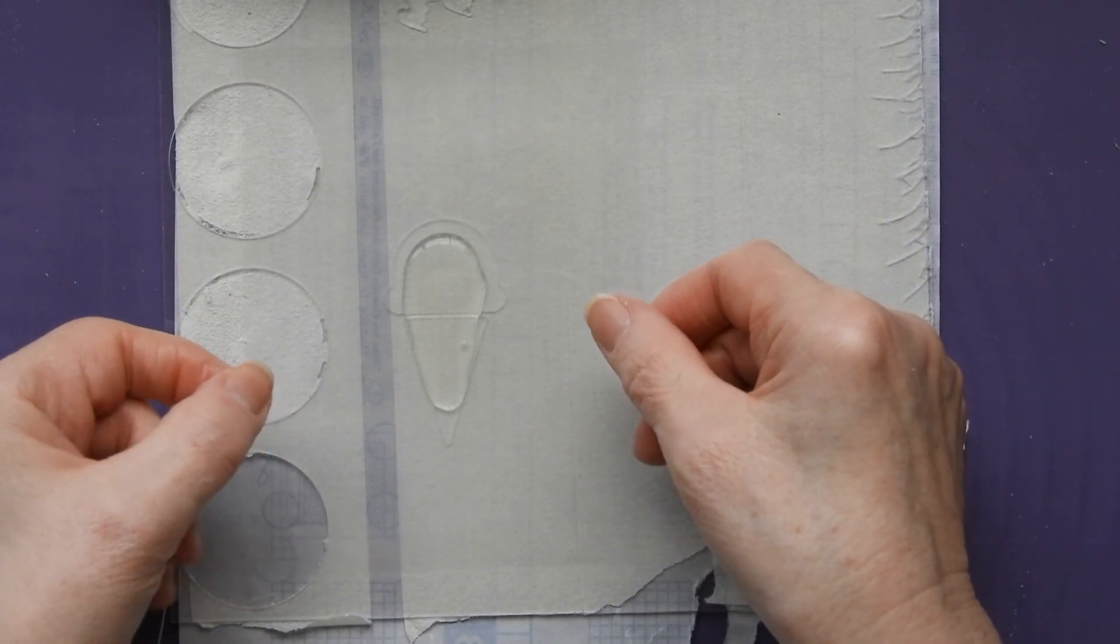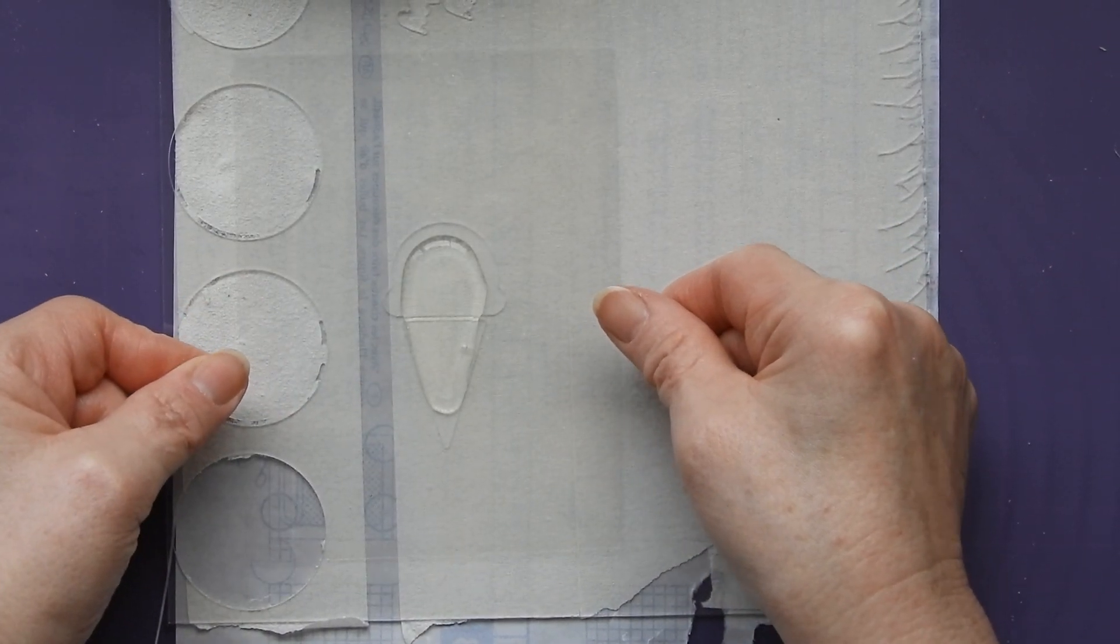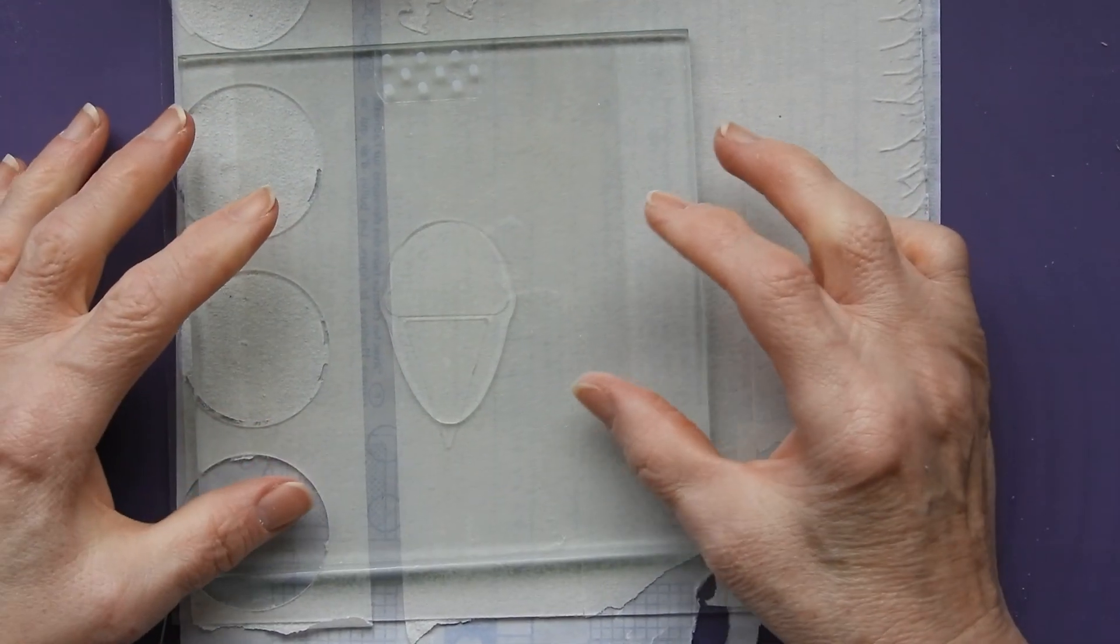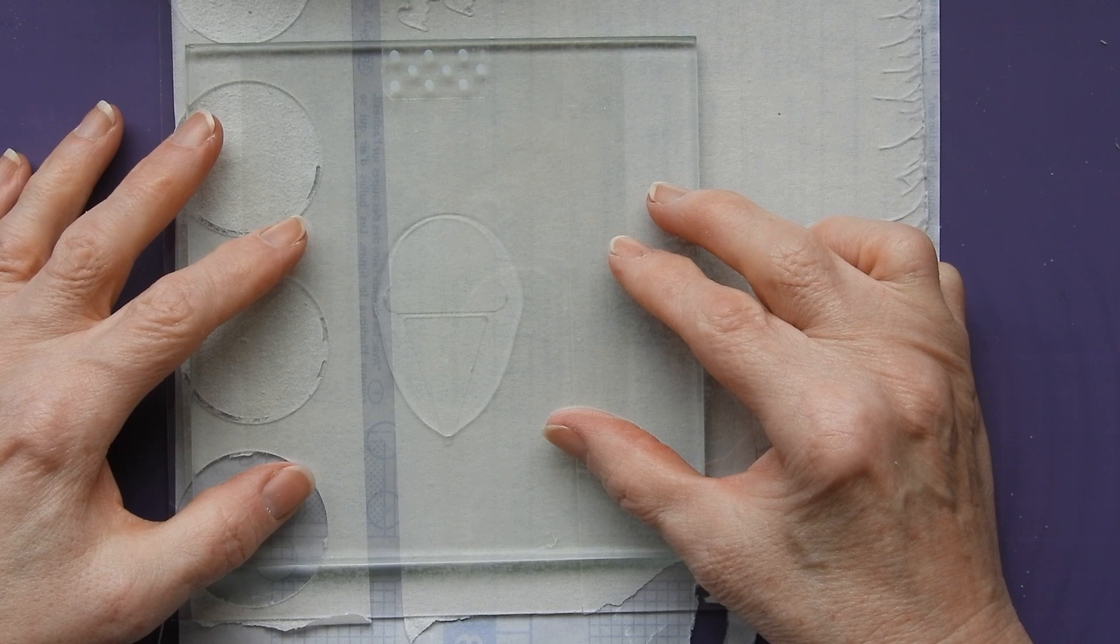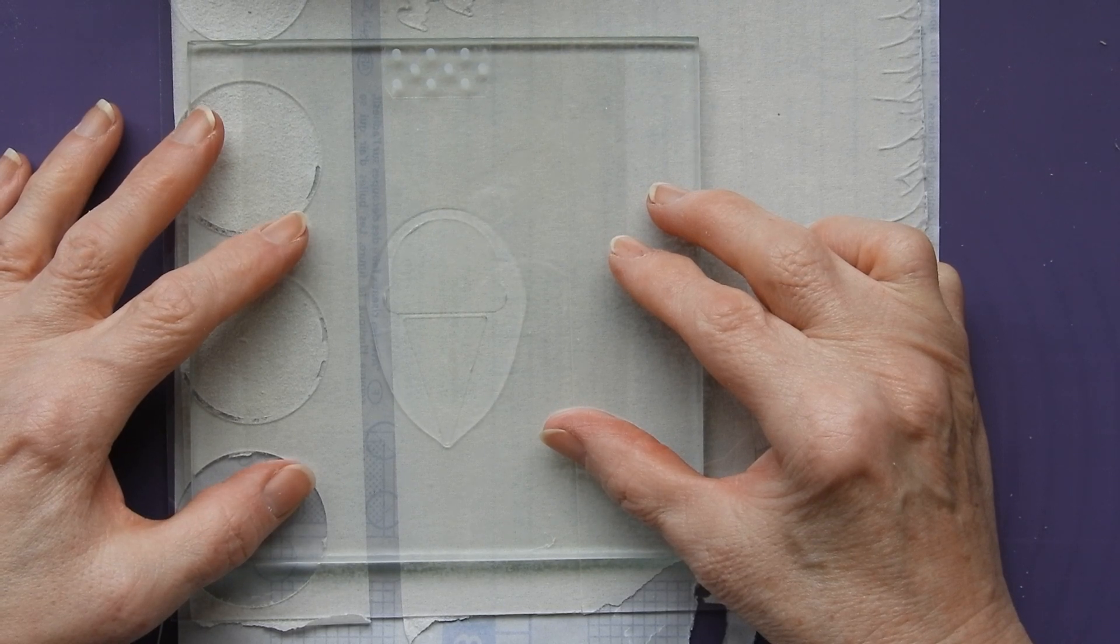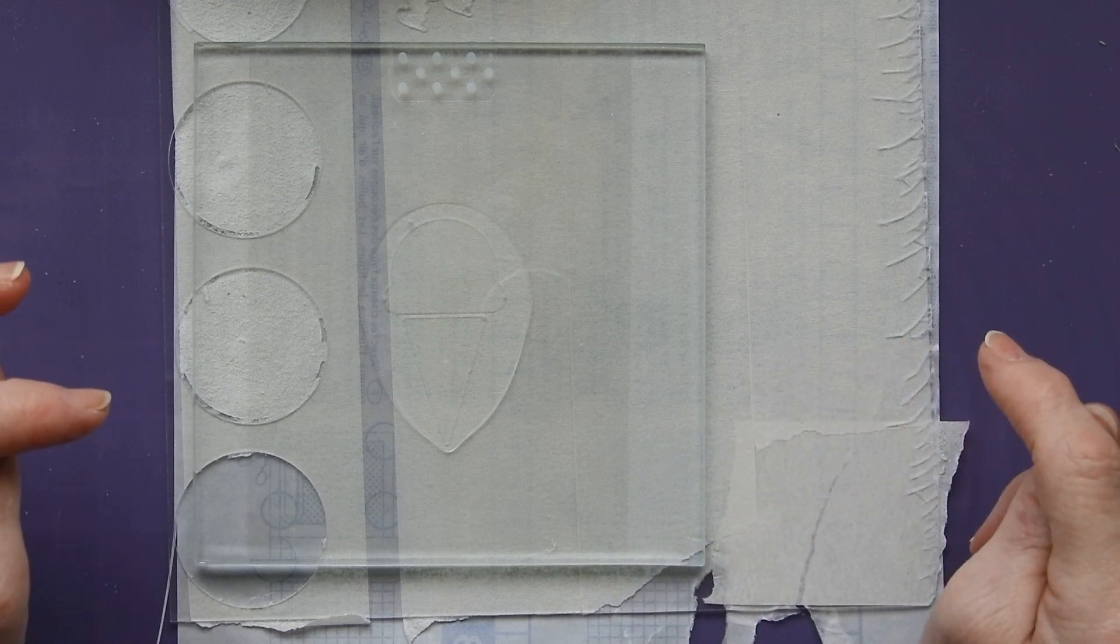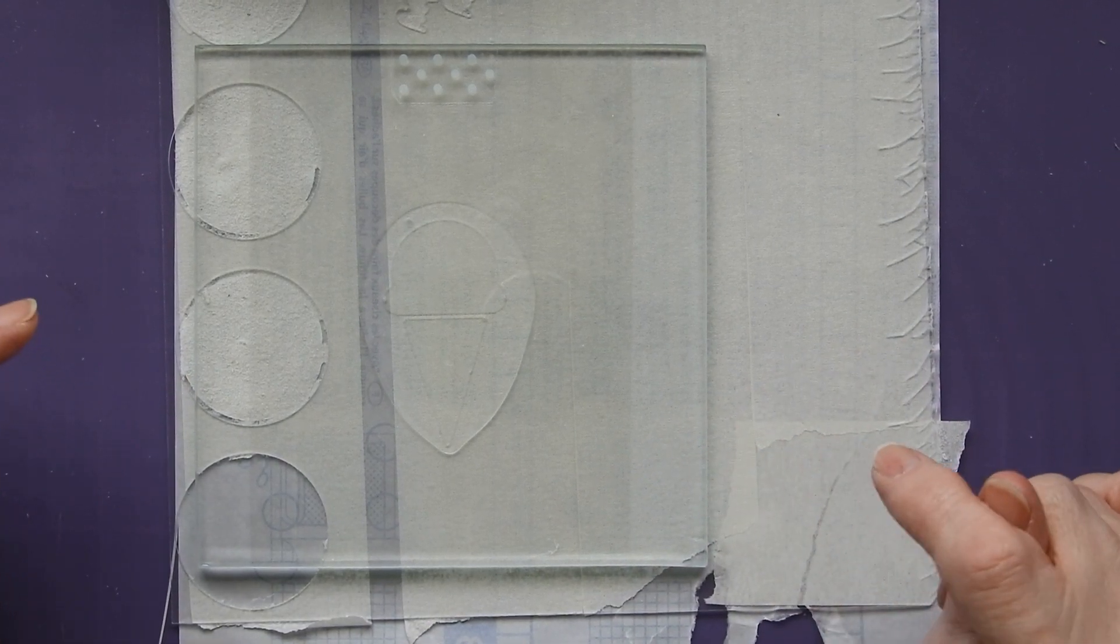I'm just going to lay the acetate on top of here and just put a piece of glass over the top. I want to press it down until it has completely filled my design, so it's gone into my design and around it. Now you do want to try and make sure you don't get any bubbles in that.